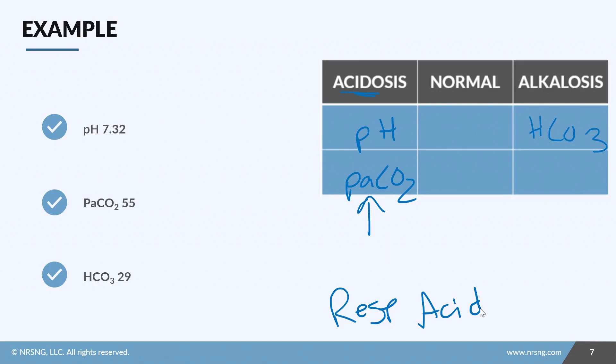Now step three: is there compensation? Are both the bicarb and the CO2 abnormal? Yes they are. But the pH is still abnormal, so it's only partially compensated. Now here's where this tic-tac-toe trick comes in: we know that it is a partially compensated condition if the normal column is completely empty. Okay, so that's your partial compensation tic-tac-toe trick - a completely empty normal column means you have some sort of partial compensation.